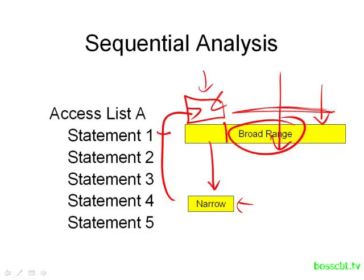Also keep in mind, when you create a new line in an Access List, it's added to the bottom of the Access List. So new entries become Statement 6, Statement 7, and so on. Additionally, you cannot delete a single statement in a standard Access List — you can only delete the entire thing. So it's all or nothing when it comes to deleting standard Access Lists.